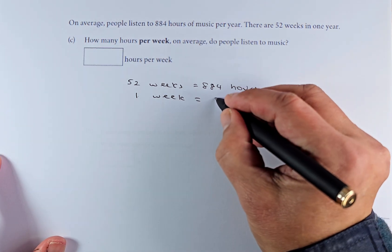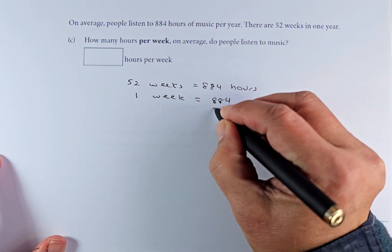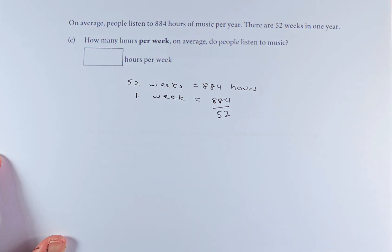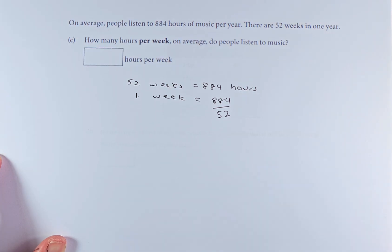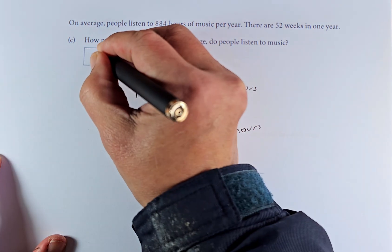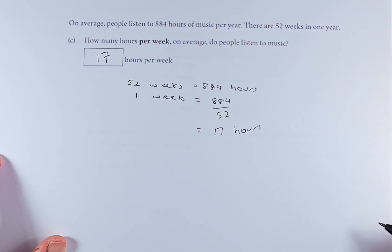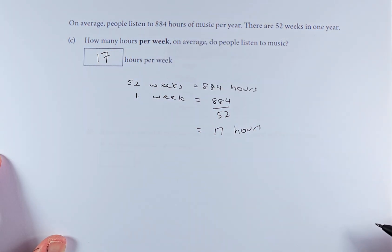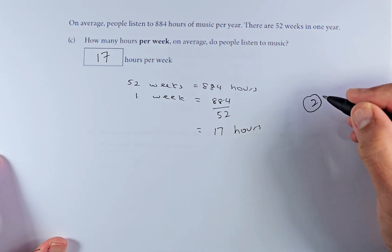So 52 weeks is 884 hours. To calculate one week, you take 884 divided by 52. And of course now, your job is to put in a calculator and the answer is going to be 17 hours. So we're going to put the answers here, 17 hours per week, and that will give a simple calculation and that will be outcome number 2.